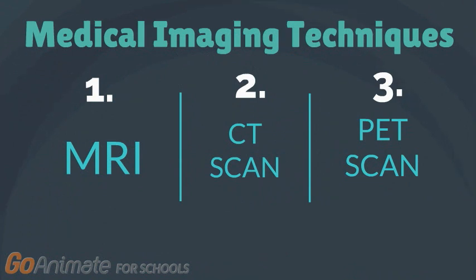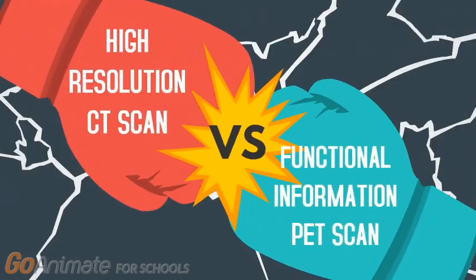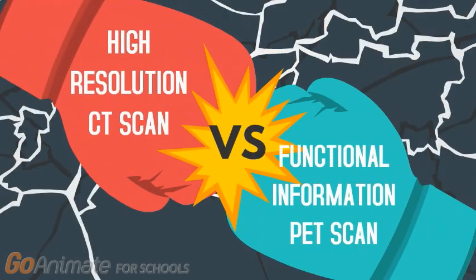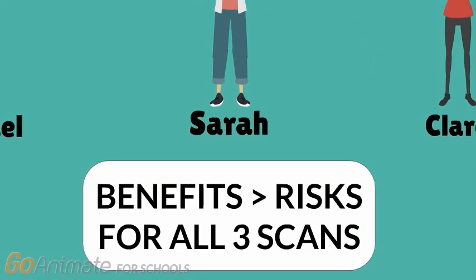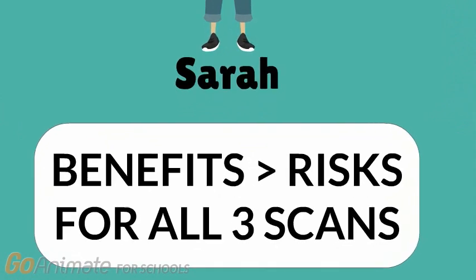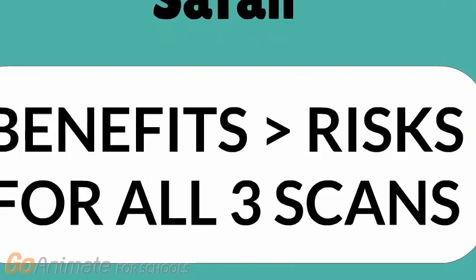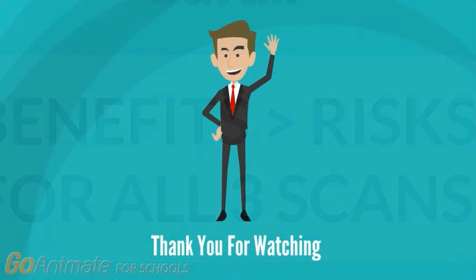The MRI, CT scan, and PET scan are three of the most commonly used techniques for medical imaging. We learned the benefits associated with each, such as the high resolution provided by the CT scan or the functional information given by the PET scan. Furthermore, we also learned about the disadvantages and risks associated with these scans, such as the possibility of an allergic reaction to the tracers in a PET scan or the exposure to high radiation in CT scans. In conclusion, the benefits outweigh the risks in all three of these scans as they provide essential information for patients and healthcare providers in need of help. Thank you for watching.